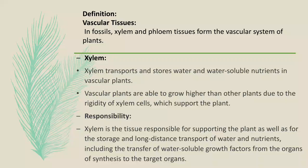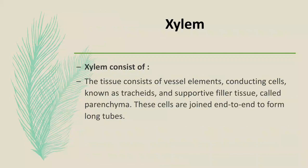Xylem is the tissue responsible for supporting the plant as well as for storage and long-distance transport of water and nutrients, including the transfer of water-soluble growth factors from the organs of synthesis to the target organs. Xylem consists of vessel elements, conducting cells known as tracheids, and supportive filler tissues called parenchyma. These cells are joined end to end to form long tubes.